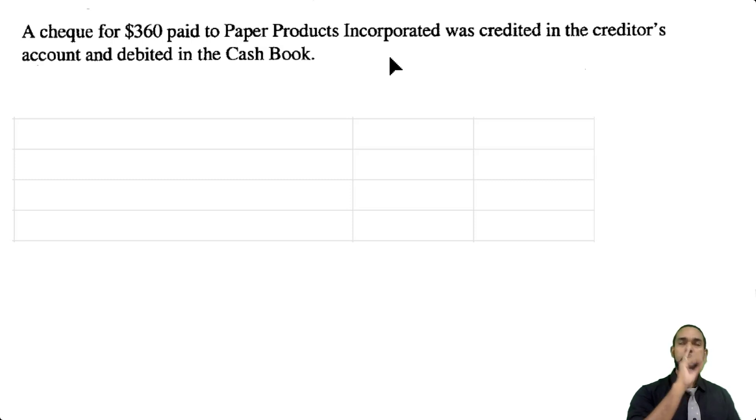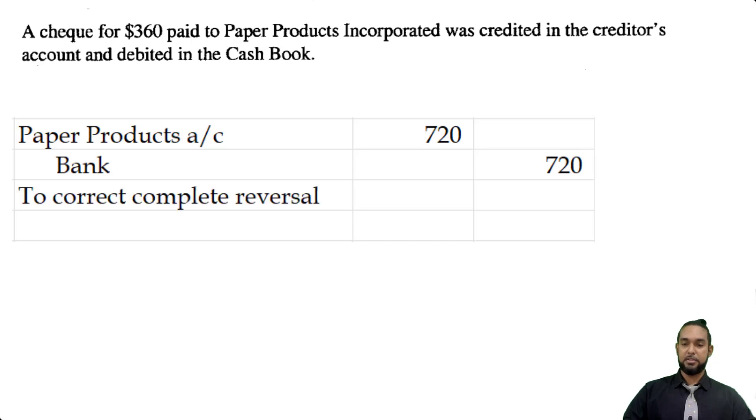So, we have, well, different ways to do it. One, you can make two sets of entries. One to cancel off the incorrect entries. And one to put in the correct entries. The thing is, those will both be for the same dollar amount. So instead of making two separate entries, you could just make one set of entries for double the amount. Which in this case would be 720, 360 by 2. So you're supposed to debit the creditor. So let's put that in and credit bank.